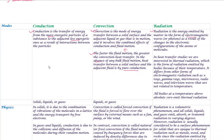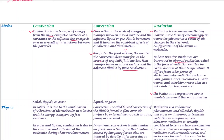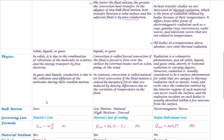Thermal radiation will be our focus. There are other electromagnetic radiations — for example, gamma radiation, X-ray, and microwaves — but these are due to other causes. Thermal radiation is specifically due to temperature difference. The temperature causes matter to emit thermal energy due to the kinetic energy of the particles. So we focus on thermal radiation.